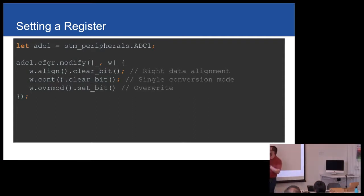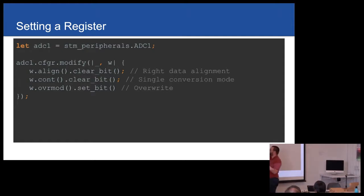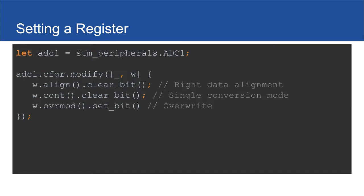Walking through the syntax: this is our peripheral — ADC1, configuration register CFGR. We say we modify it, and in here the syntax uses a closure — basically a list of commands that get executed atomically. This is a 32-bit register with various bits. For example, I'm setting the alignment bit and clearing it; the continuous bit I'm clearing because I only want a single sample; and then I set the overwrite bit. These are all auto-generated, so they have meaningful names that match what's in ST's reference manual, making it pretty easy to follow along.